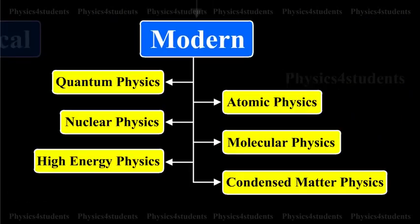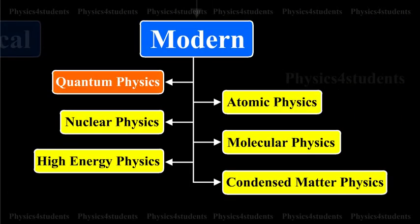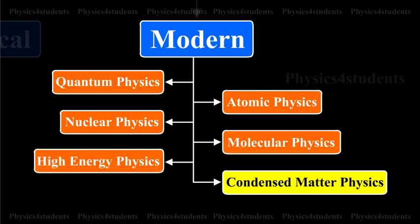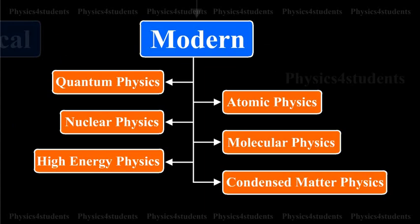Modern physics is divided into Quantum physics, Atomic physics, Nuclear physics, Molecular physics, High energy physics, and Condensed matter physics.